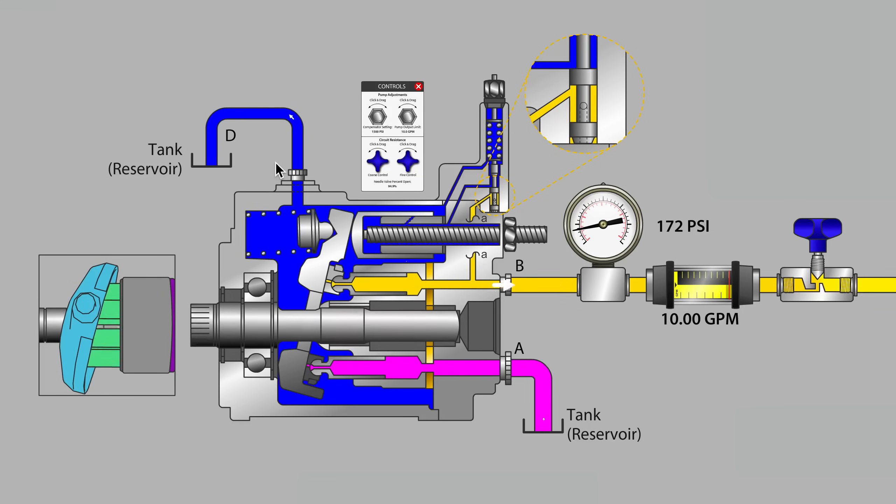And some pumps, such as flow compensating or load sensing pumps, make very small corrections to the swashplate position or, said another way, to the displacement of the pump to compensate for minor changes in the loading of the hydraulic system.